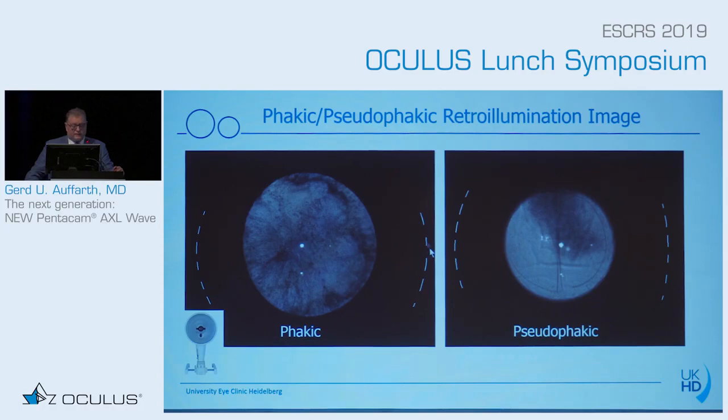Here are two examples of retroillumination photos. This is of a phakic lens — you can see the cataract and the structure of the cataract. Here you see the pseudophakic eye with the capsulotomy and folds in the capsule. We may use it to quantify PCO in the long run, and also for assessing centration and rotational stability of lenses.